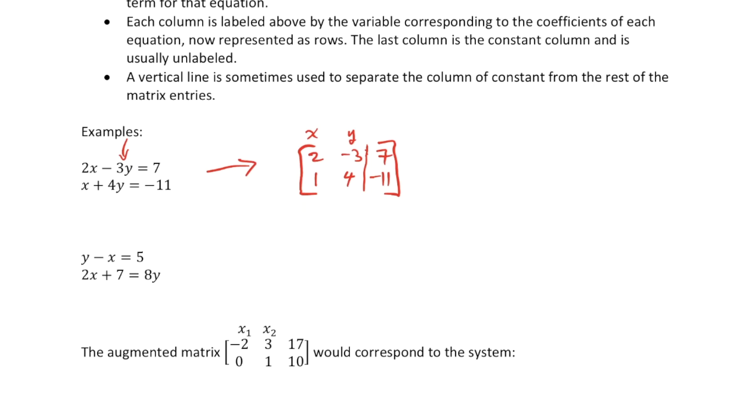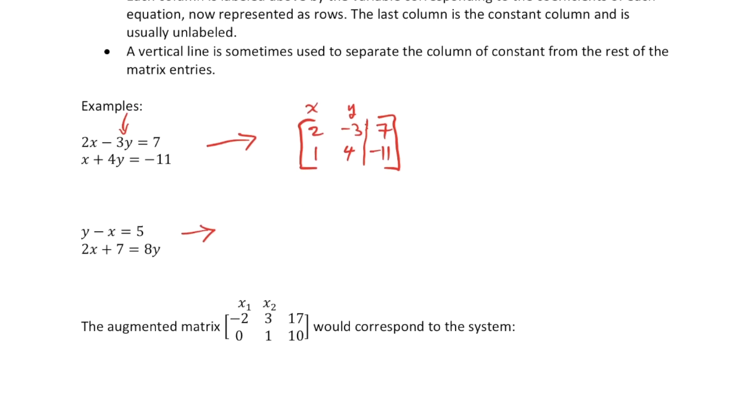Now in the second system here that I've got written, first of all you guys see that it is not in proper form here. So what I'm going to do, I'm going to write x's before y's, but I could have written y's before x's. Let's be alphabetical here. I'll go negative x plus y equals 5.